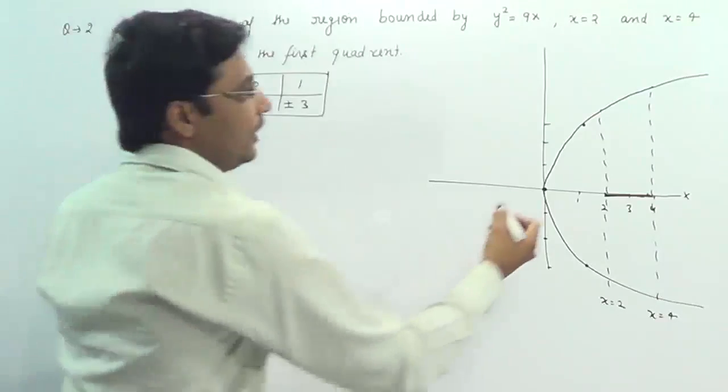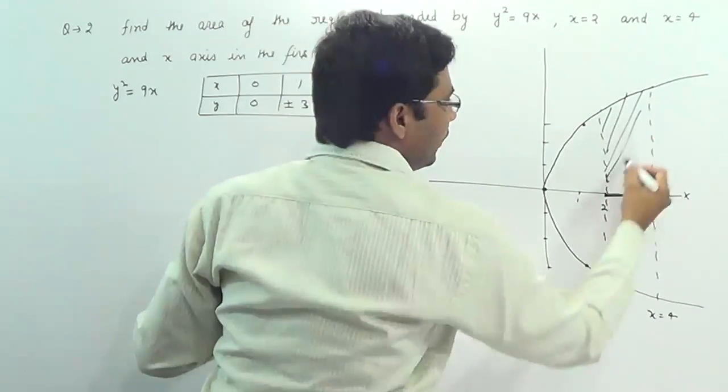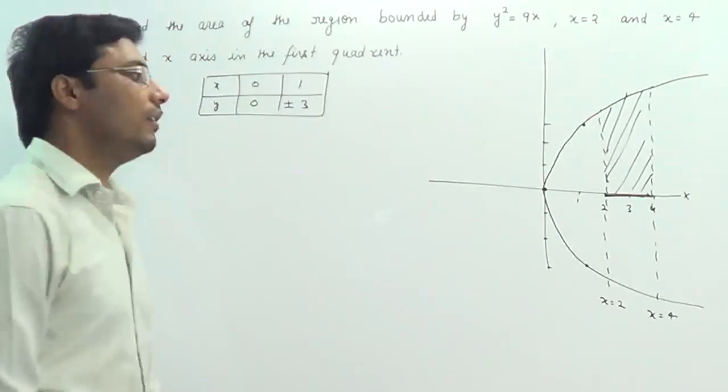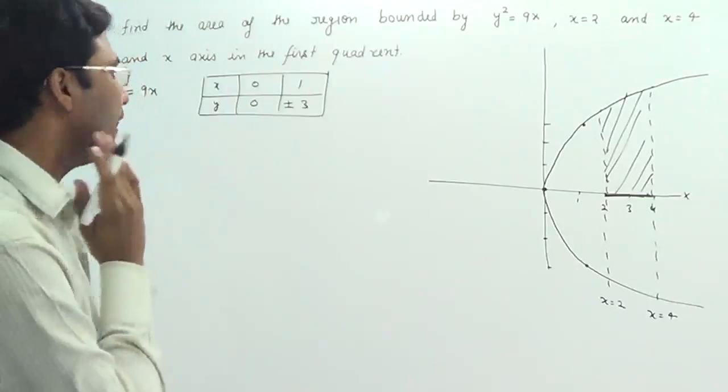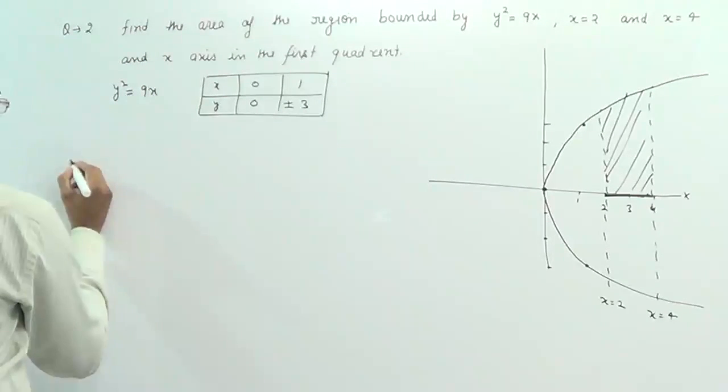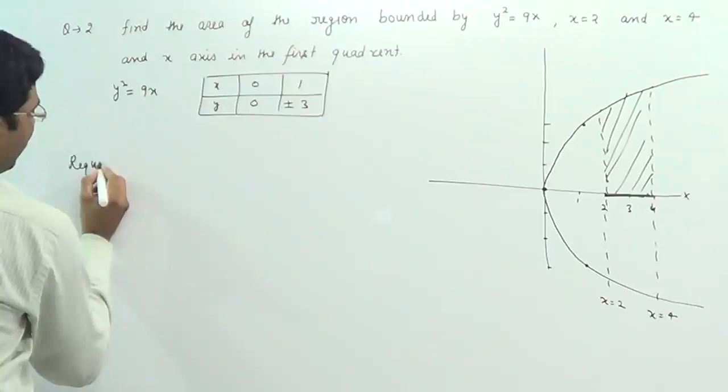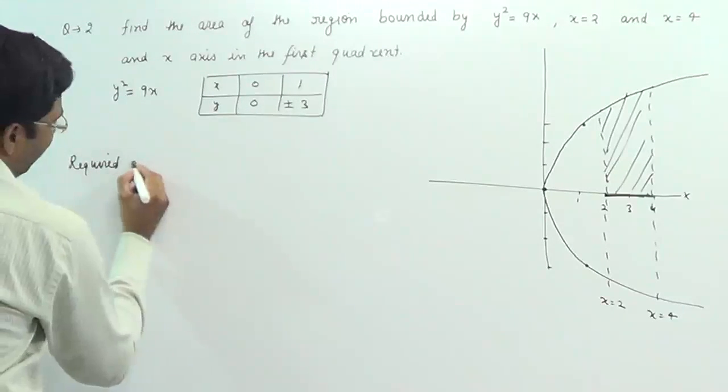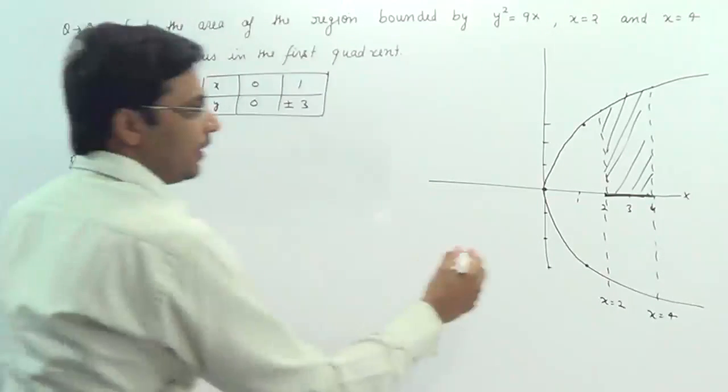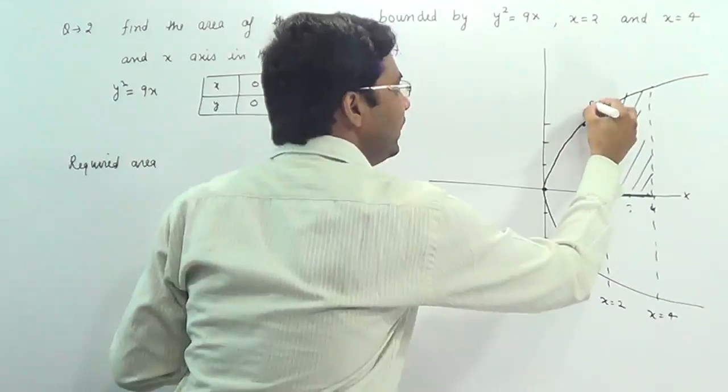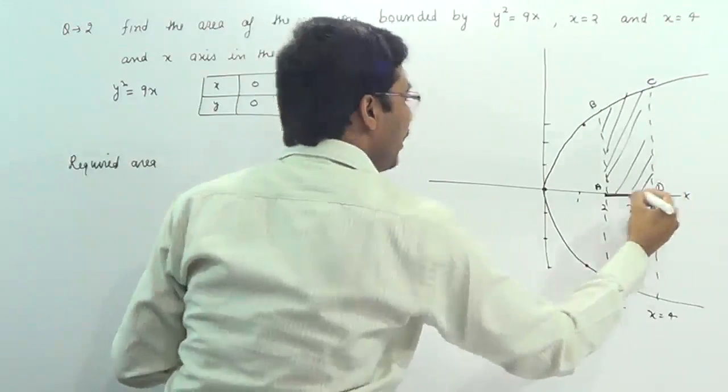In the first quadrant only, we need to find this area. We have the limits, so let's name it ABCD. We need to find the area of ABCD.